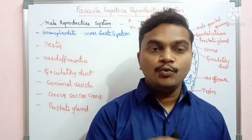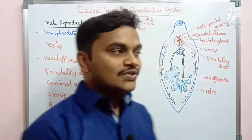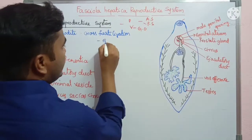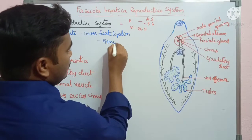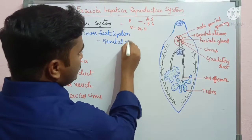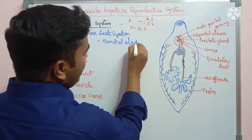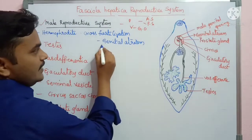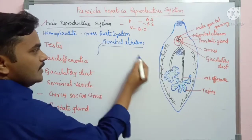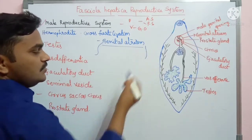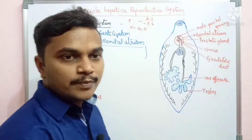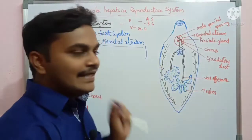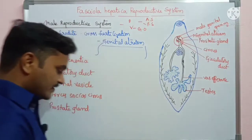These common ducts open into the genital atrium, which is located at the anterior region of the body. Both male and female reflexes open into the genital atrium located at the anterior region.